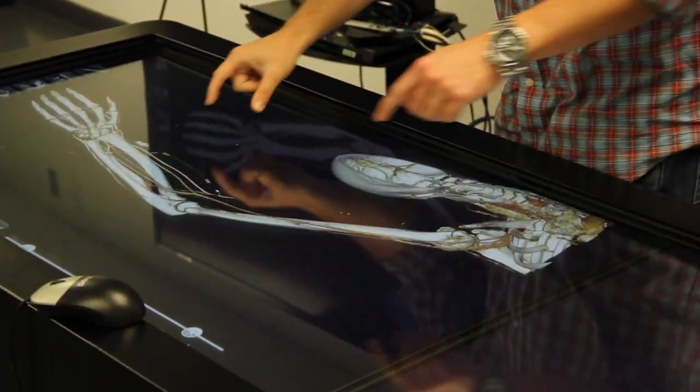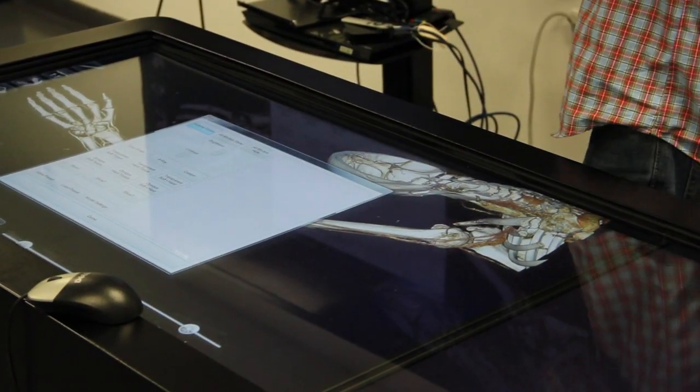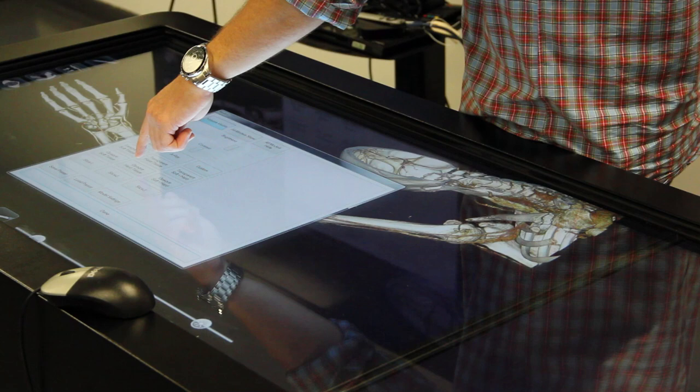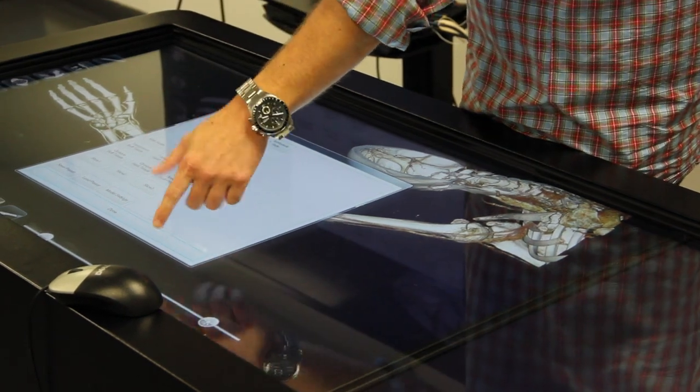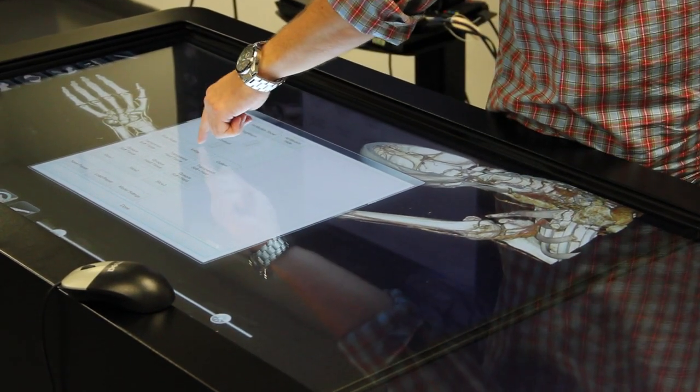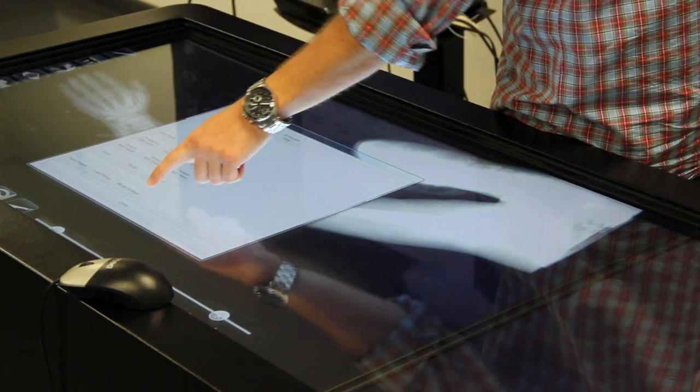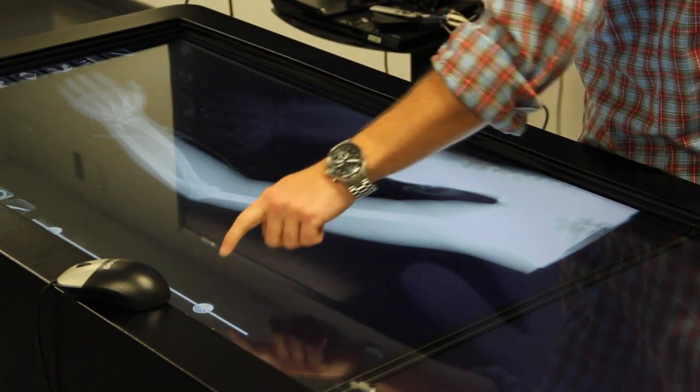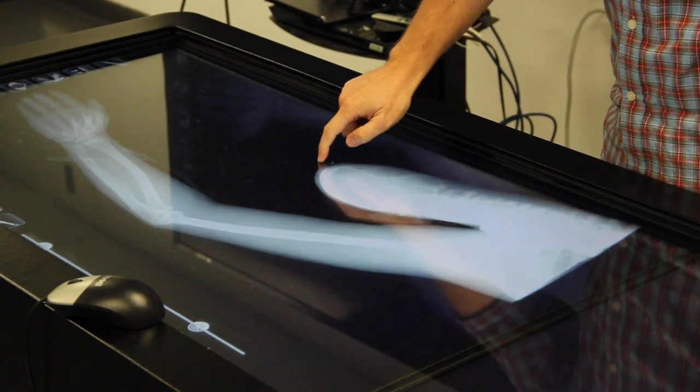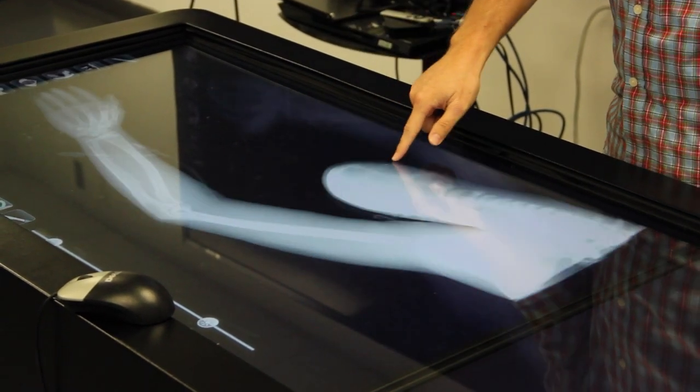Now one thing we can do with this as well is we can change the render setting. So this is what's known as the opaque hard tissue. If you hit the eyeball, it will open this up. We can change this to an x-ray mode. If I change the brightness a little bit, we can now look at that as a 3D interactive x-ray.